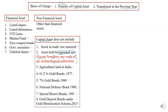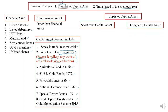Now, why are we distinguishing between financial asset and non-financial asset? We have to classify them into types of assets. The types of capital assets are short-term capital asset and long-term capital asset. How do we classify an asset as short-term or long-term is based on the period of holding — from the date of purchase till the date of sale. For example, if I buy an asset in 2012 and sell it in 2022, the period of holding is 10 years. Based on this period of holding we classify an asset into short-term or long-term.